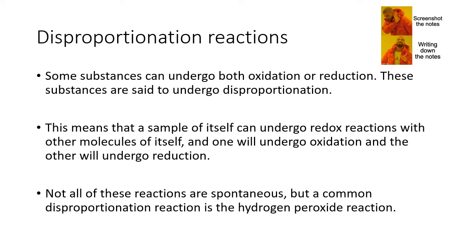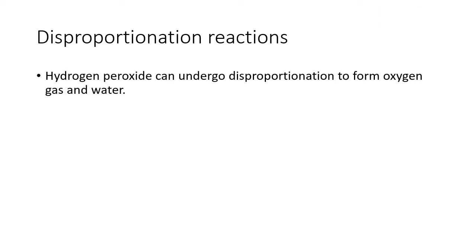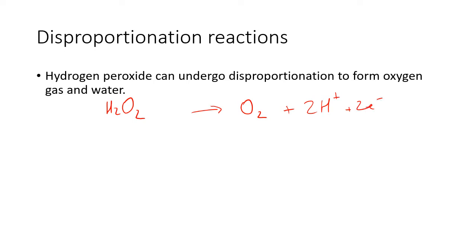Not all of these reactions are spontaneous, but a common disproportionation reaction is the hydrogen peroxide reaction. Hydrogen peroxide can undergo disproportionation to form oxygen gas and water. So let's go through that: H₂O₂ — let's write out the balanced half-equation. We know it's going to form oxygen gas. Balance out the non-hydrogen, non-oxygen atoms, then balance out the oxygens, balance out the hydrogens — giving 2H⁺ — then balance out the electrons: zero on the left, positive two on the right, so we add two electrons on the right.